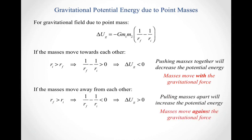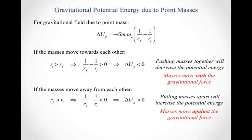On the other hand, if I move my masses away from each other, the final distance is greater than the initial distance. So 1 over the final distance minus 1 over the initial distance is now negative. This negative term in the parentheses cancels out the leading minus sign, and I get that the gravitational potential energy is increasing. By pulling your masses apart, we've increased the potential energy — exactly what we expected, because we're moving our masses against the gravitational force.